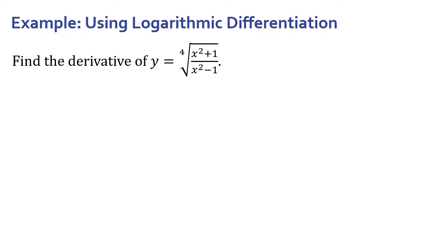Find the derivative of y equals the 4th root of (x² + 1) over (x² − 1). You could go through and use the chain rule, taking that 4th root as the outside function and (x² + 1)/(x² − 1) as the inside function. I implore you to pause and work out the derivative that way. Then come back and I'll show you how to get the same answer using logarithmic differentiation — avoiding having to deal with the quotient rule and the chain rule all at once.